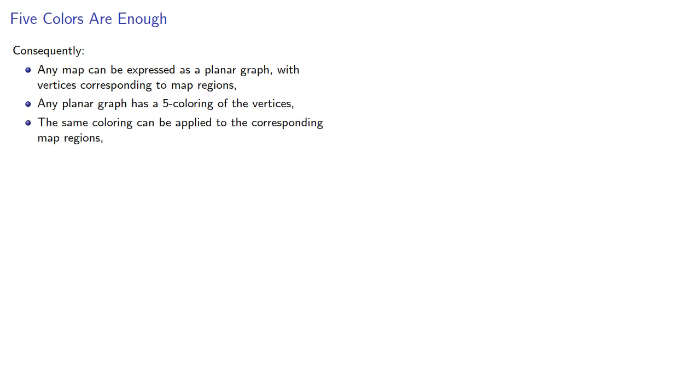Consequently, any map can be expressed as a planar graph with vertices corresponding to the map regions. Any planar graph has a 5-coloring of the vertices, and the same coloring can be applied to the corresponding map regions. So any map can be colored with 5 or fewer colors.